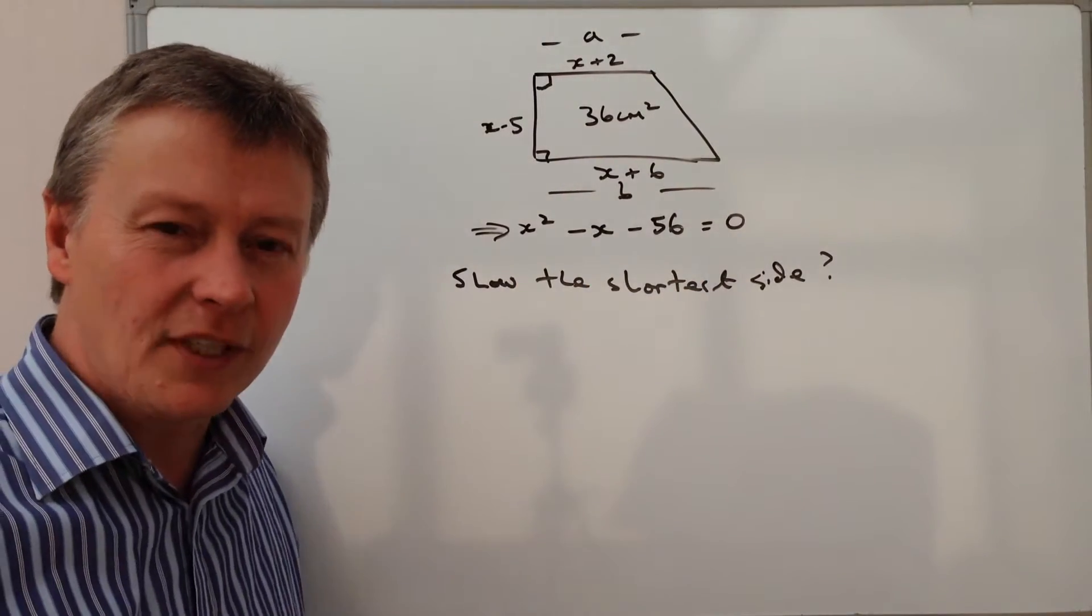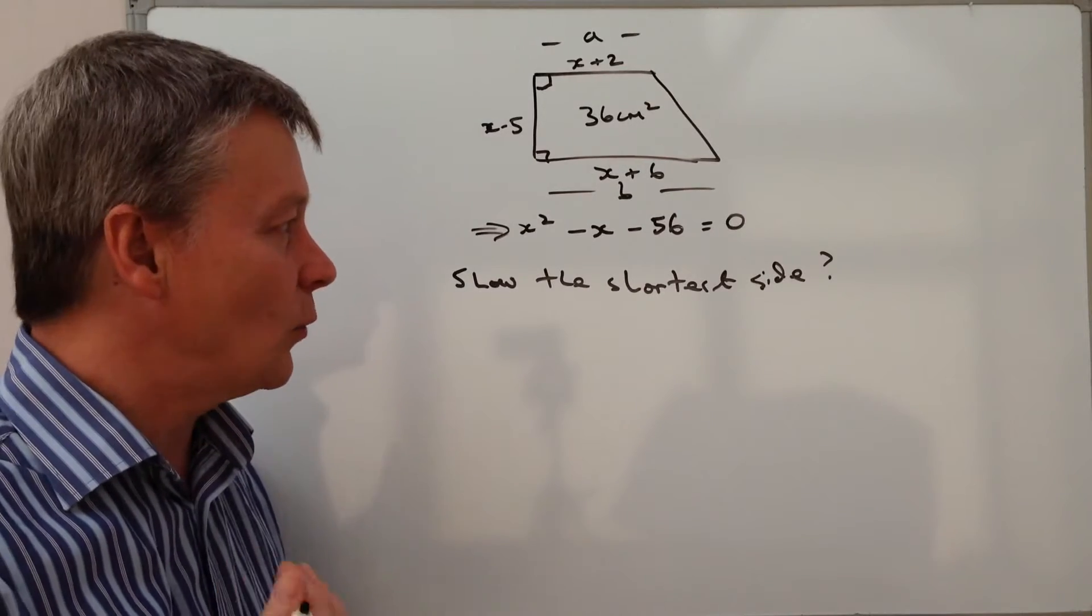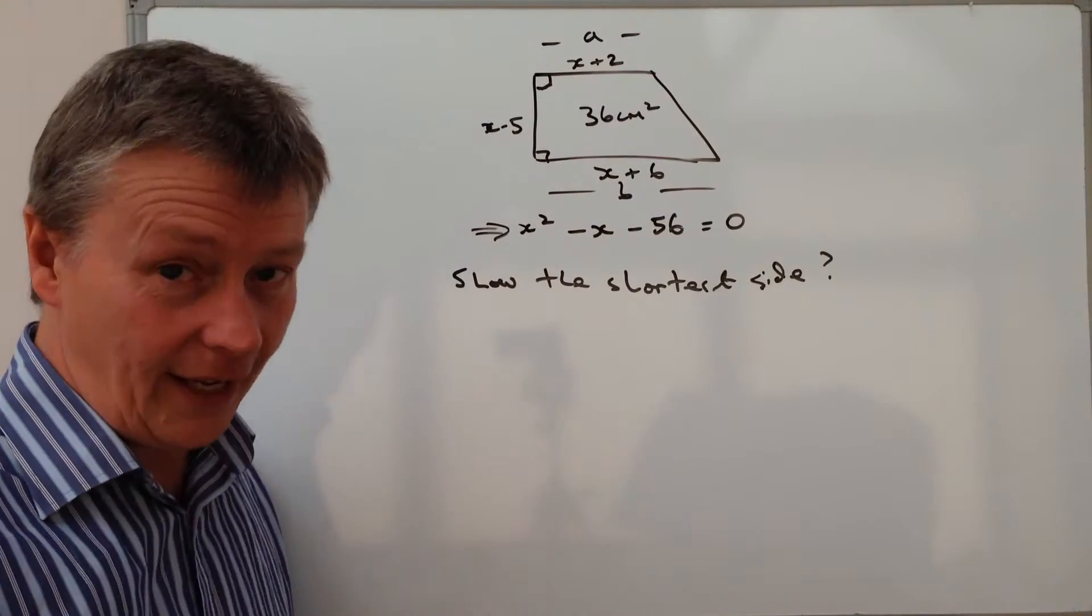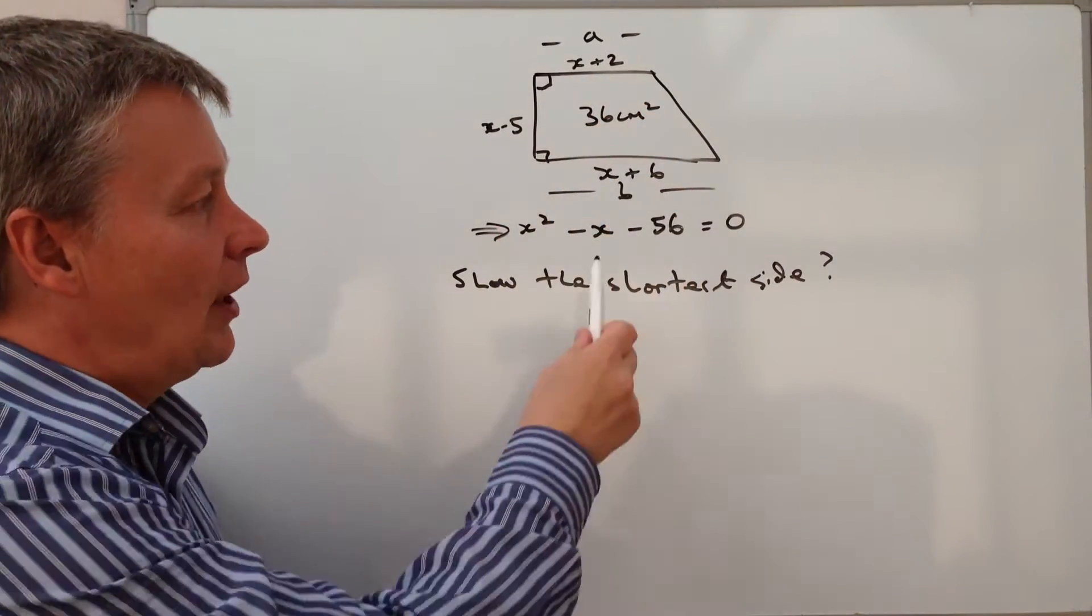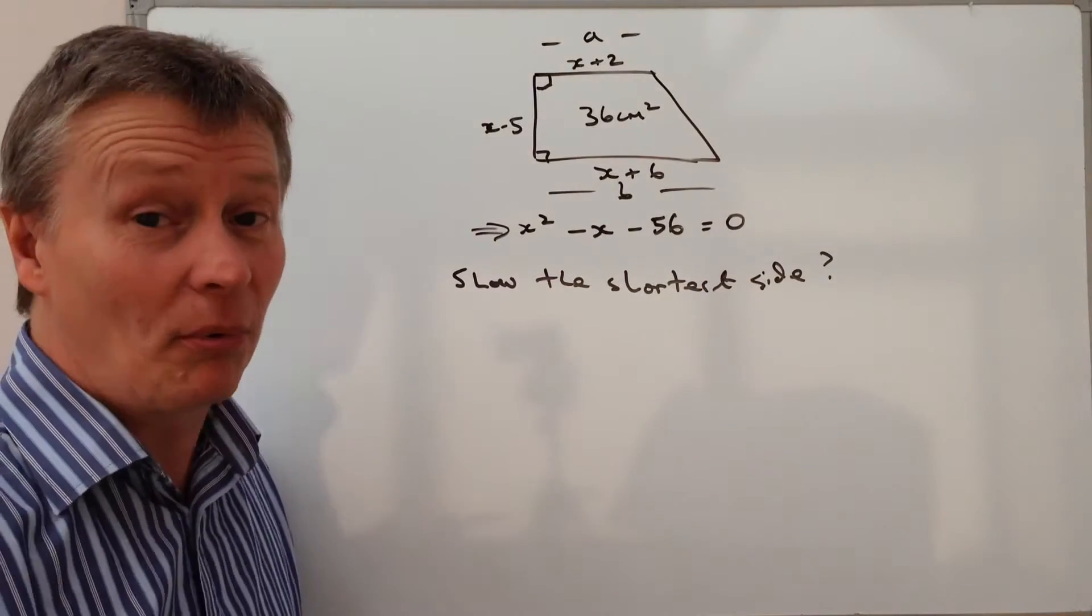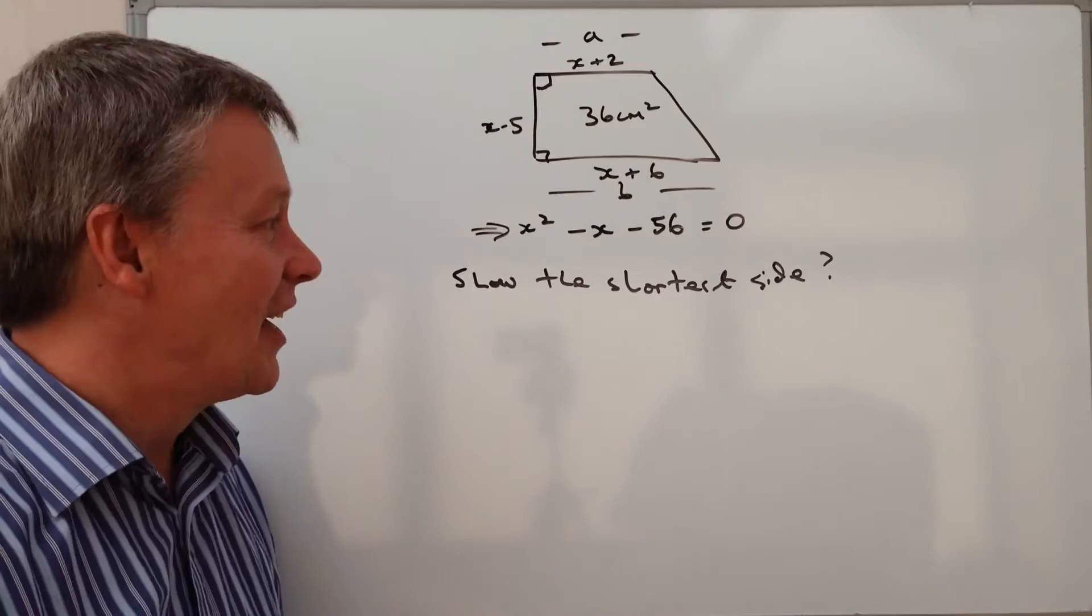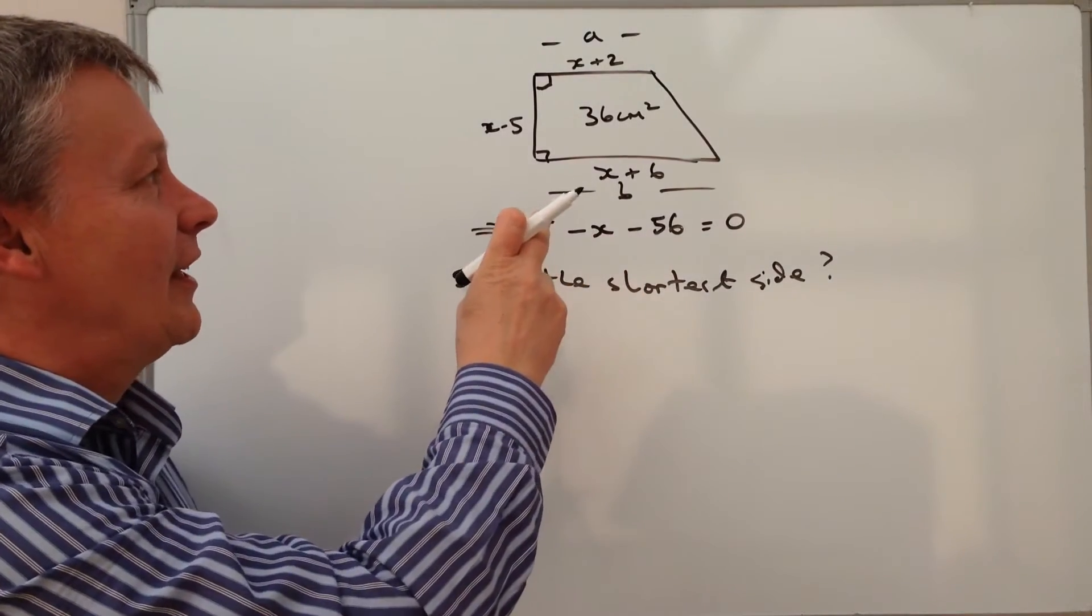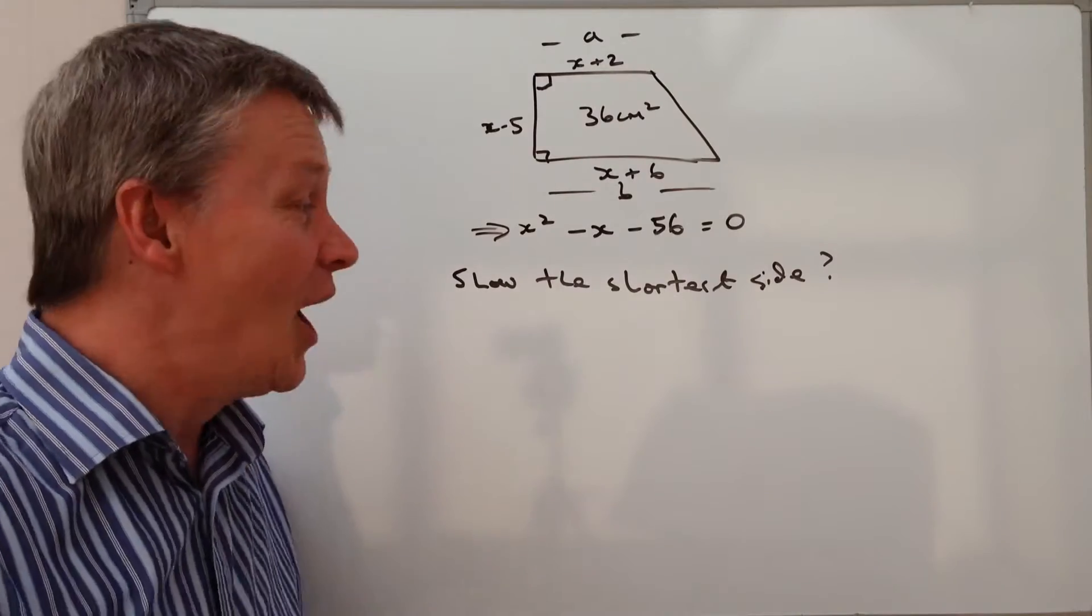So basically what you'll need to be able to do with this is factorise it and work out the values of x and that will then give you the ability to solve and look at each of these. I know it seems obvious that x plus 6 is probably going to be the longest side but I guess we need to prove that really. The shortest side will probably be one of those. It'll be either x minus 5 or x plus 2.